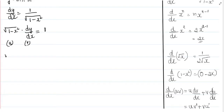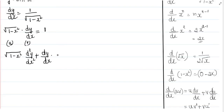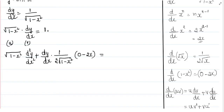On applying the product rule, we get root of 1 minus x squared into d squared y by dx squared, plus v into du by dx — that is, dy by dx into d by dx of root of 1 minus x squared. That equals 1 by 2 root of 1 minus x squared, and differentiating 1 minus x squared gives 0 minus 2x, which equals negative 2x.